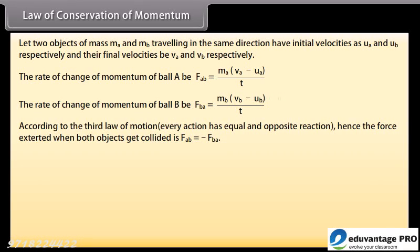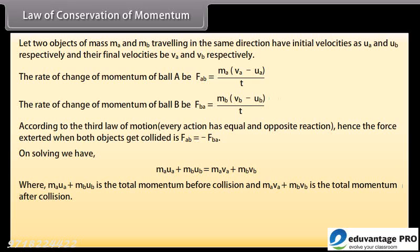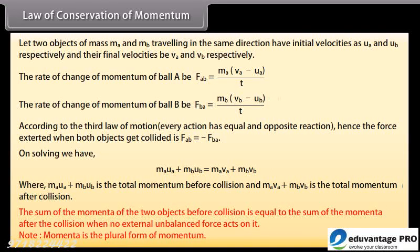According to the third law of motion, every action has equal and opposite reaction. Hence, the force exerted when both objects get coiled is F-A-B equal to minus F-B-A. On solving we have M-A-U-A plus M-B-U-B is equal to M-A-V-A plus M-B-V-B, where M-A-U-A plus M-B-U-B is the total momentum before collision, and M-A-V-A plus M-B-V-B is the total momentum after collision. The sum of the momenta of the two objects before collision is equal to the sum of the momenta after the collision when no external unbalanced force acts on it. Momenta is the plural form of momentum.